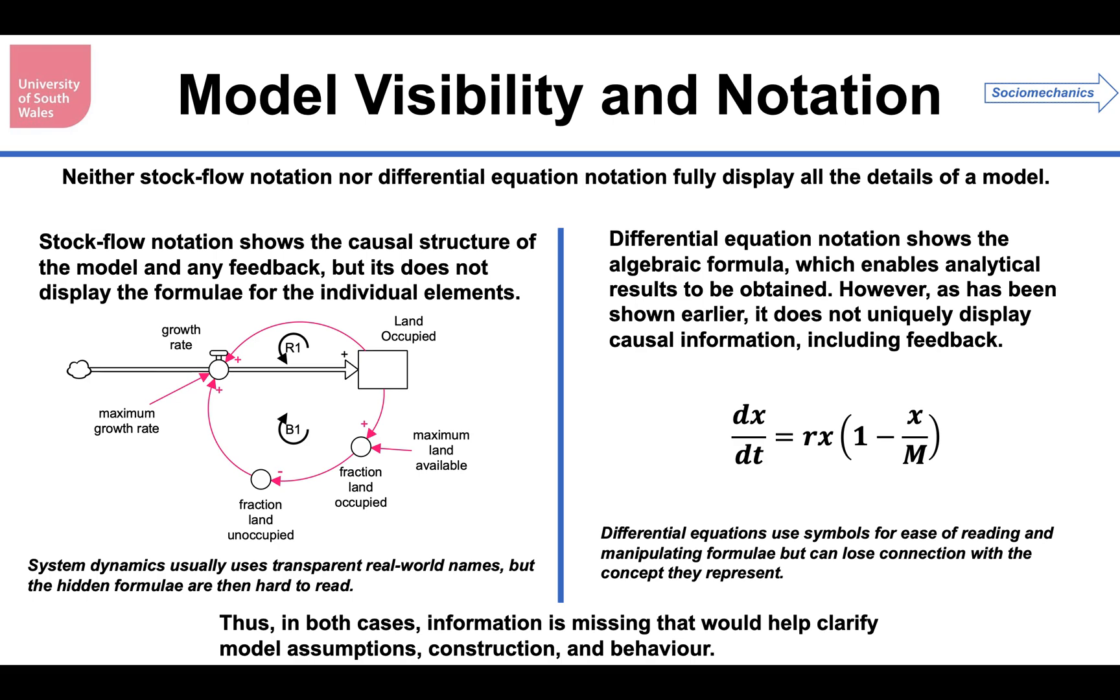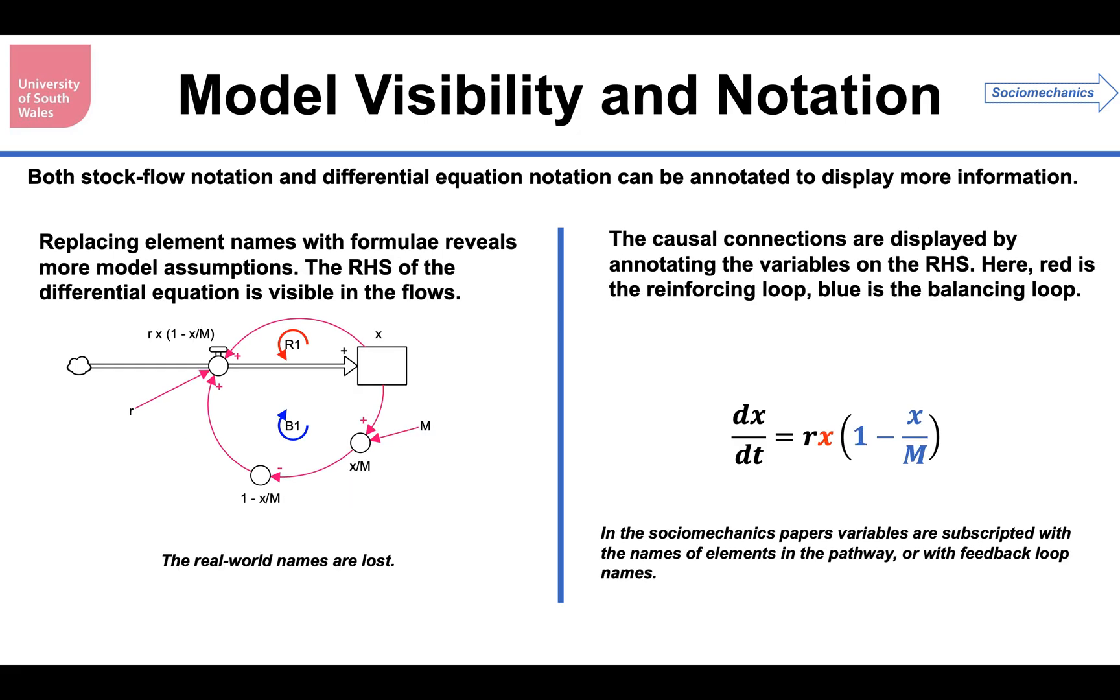Both modeling paradigms are missing information. So sometimes I do two things. Sometimes I express my stock flow models with all the formulas on, as I've been showing recently. So I replace the element names with the formulas, and it reveals the model assumptions mathematically. And of course, if you then look at the flow, you actually get the final right-hand side of the differential equation. The only downside of that is the real names are lost. So it wouldn't be of much use in the average system dynamics modeling scenario where you're talking with people who are not mathematicians. This would be a no-no. But to somebody like me, this tells me everything about the model I need to know.